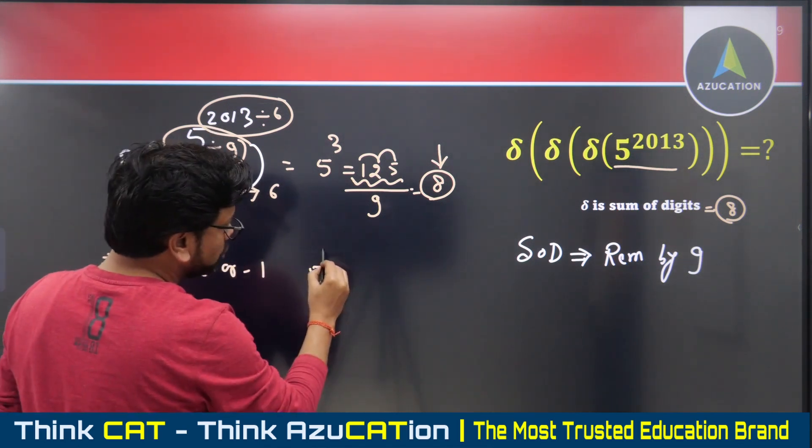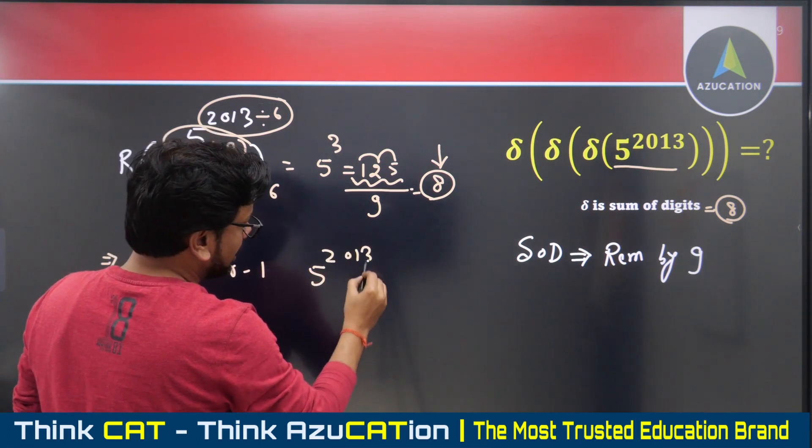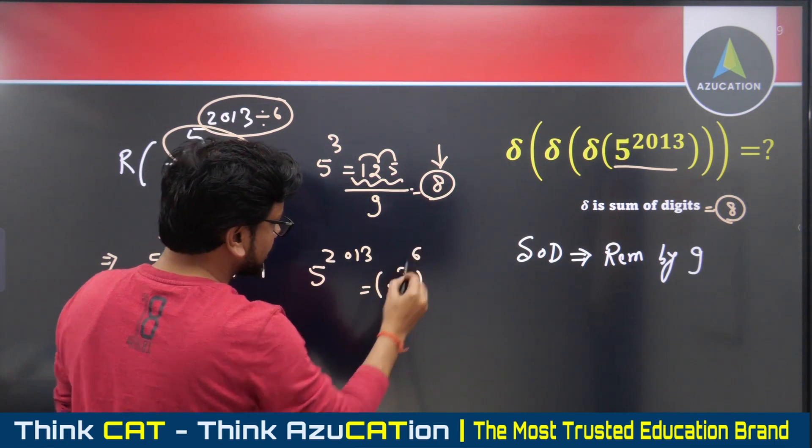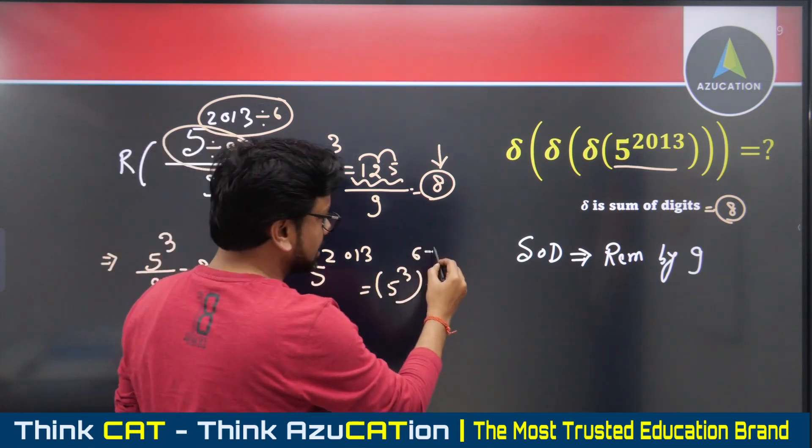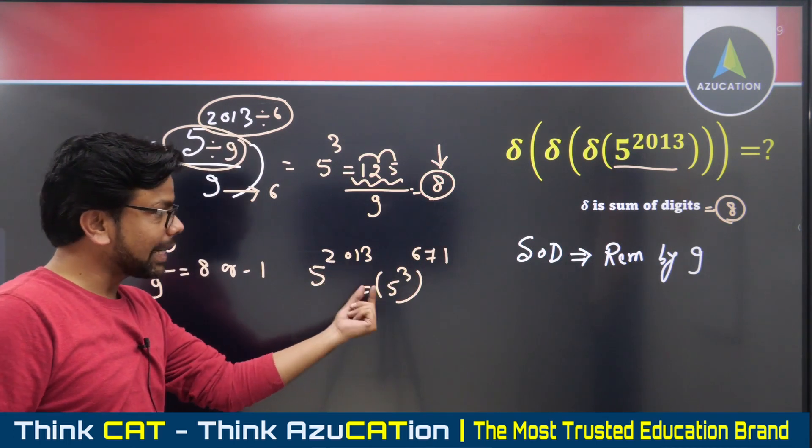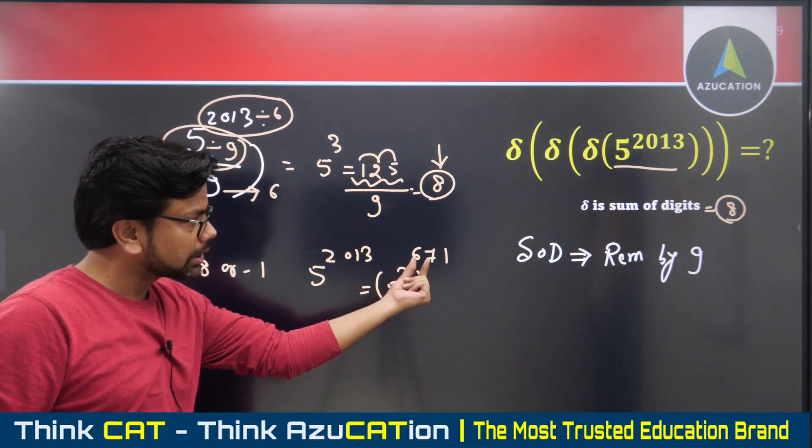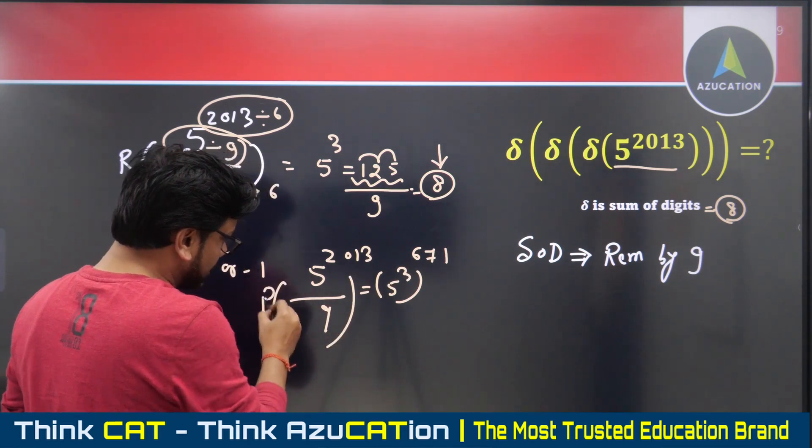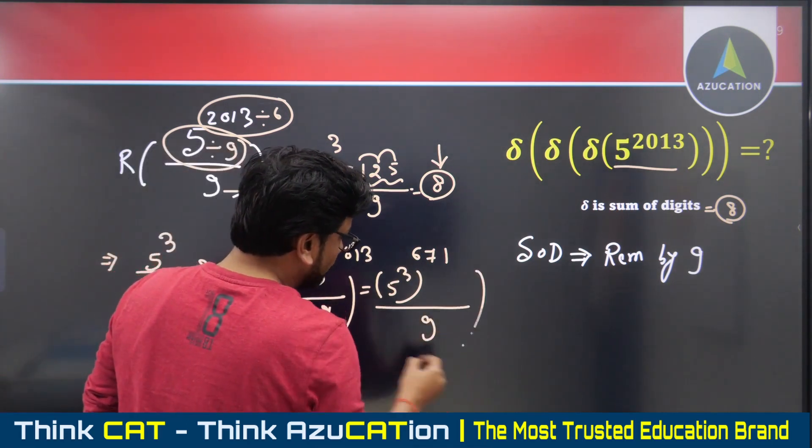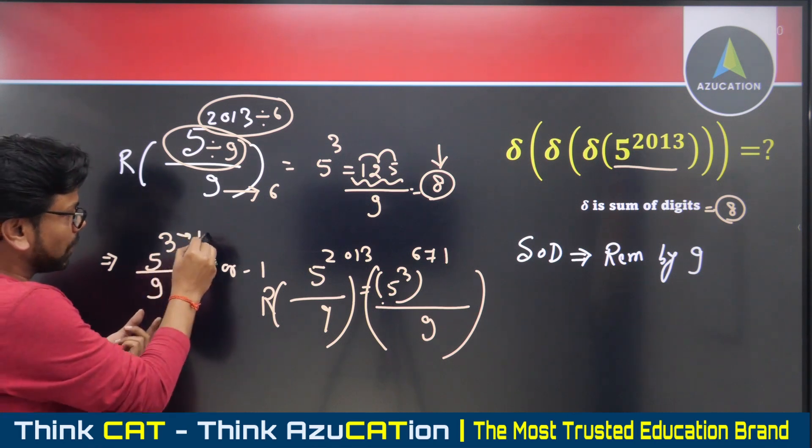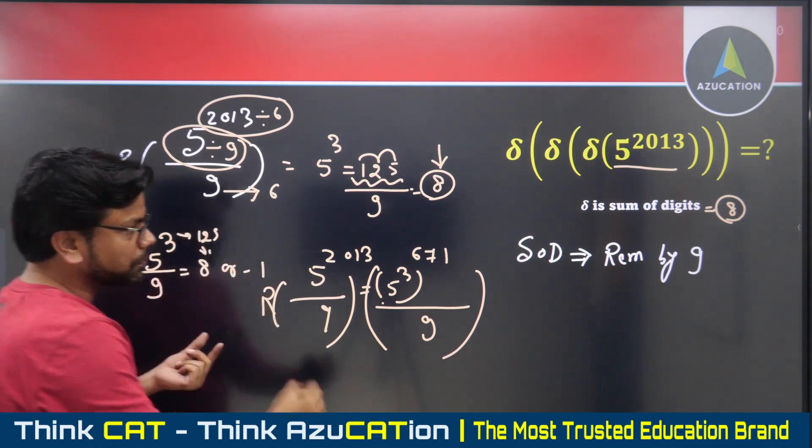I can write 5 raised to power 2013 as 5 cube raised to power 671. That is, 5^2013 equals (5^3)^671. When we divide this by nine, we can say 5 cube equals 125, which gives remainder eight or minus one.